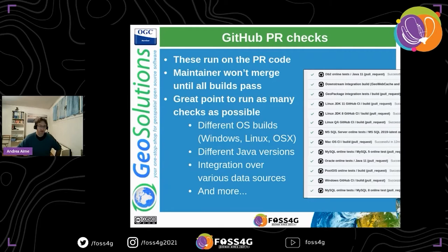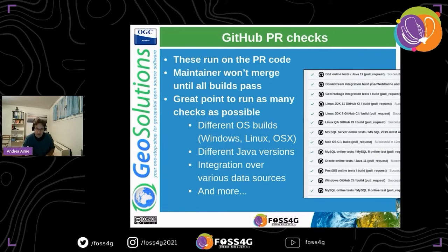Enter GitHub pull request checks. They run on the changes of the pull request and maintainers won't merge until all builds pass. It's a great point to run as many checks as possible. We build on different operating systems to re-establish multi-OS support, test on different Java versions, and run integration tests over various data sources including SQL Server, MySQL, Oracle, PostGIS and GeoPackage. We also run automatic QA tests. When this full battery of tests is green, there's a very good chance the change is not introducing anything bad.